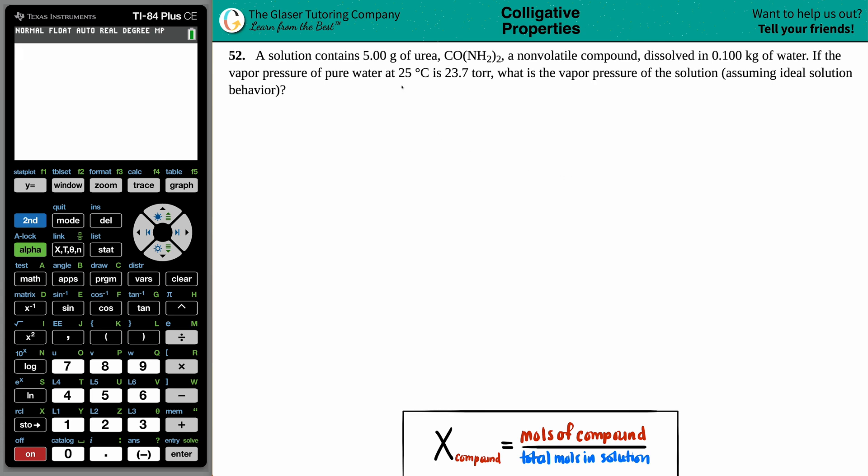Number 52. A solution contains 5.00 grams of urea, which is CO(NH2)2, a non-volatile compound, which is dissolved in 0.100 kilograms of water. If the vapor pressure of pure water at 25 degrees Celsius is 23.7 torr, what is the vapor pressure of the solution? And then we're assuming ideal solution behavior.